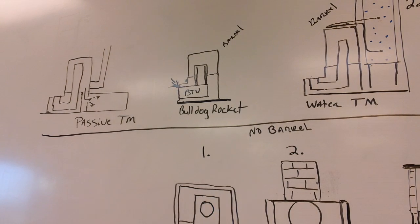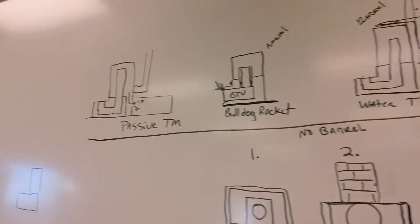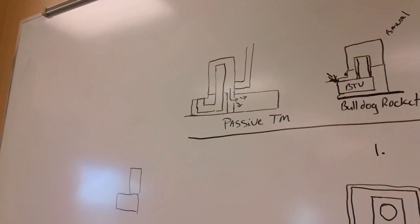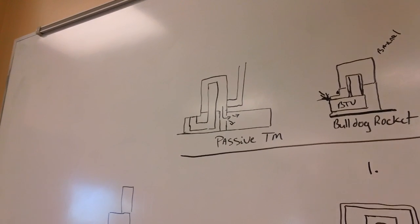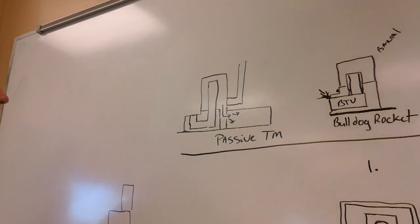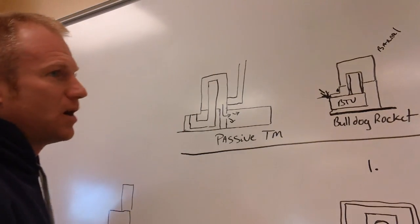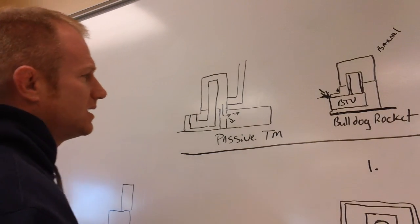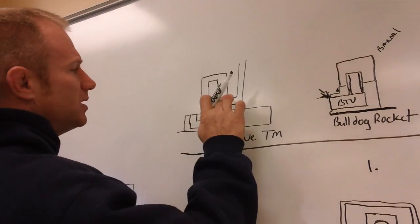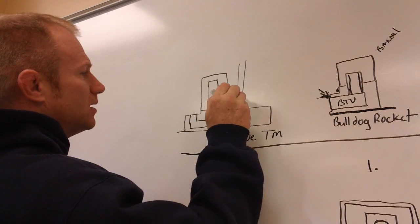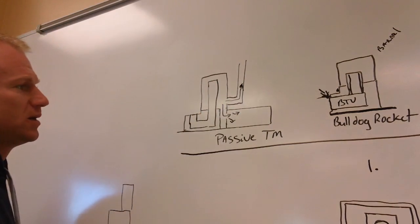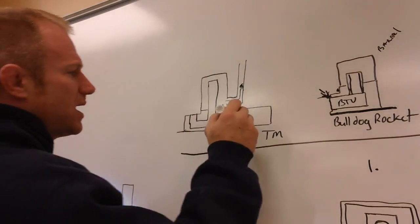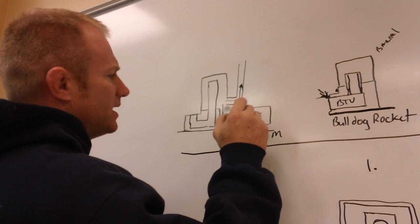Now there's one other thing I wanted to point out that I've seen set up, and that's the passive thermal mass. The passive thermal mass would be where the smoke doesn't actually go up or into the thermal mass to heat it. The smoke's actually going up the chimney here, but the thermal mass is open to the barrel so the smoke can come in here and roll around in the heat.